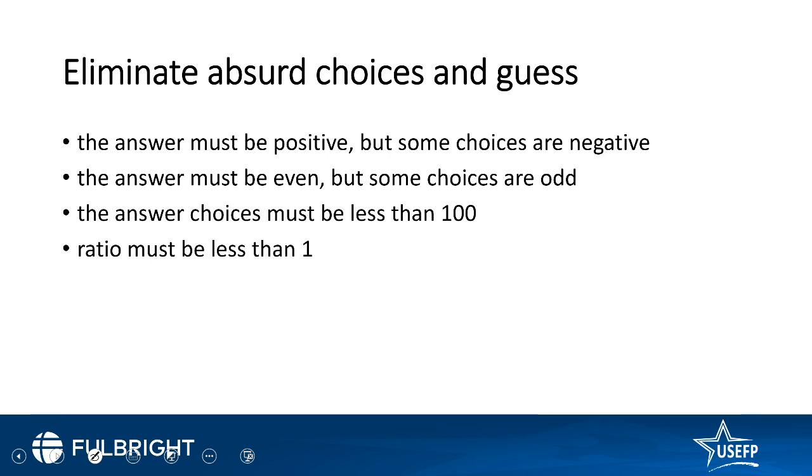In a ratio question, if the ratio must be less than one and it is more, then you can eliminate those. The obvious choices, they are obvious because even without solving you are getting to the answer, those options are mostly wrong.